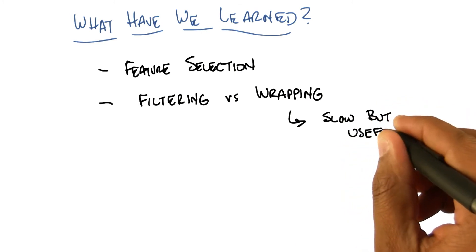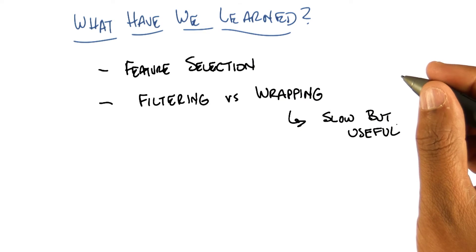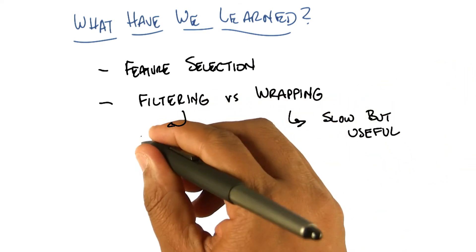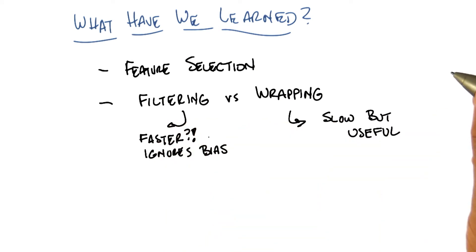Is that useful in the sense that you defined it? Yes. Or at least can be useful, whereas filtering is simpler, possibly faster, but maybe misses the point. Probably faster, yeah, but ignores bias. Okay, so what else, is that it?